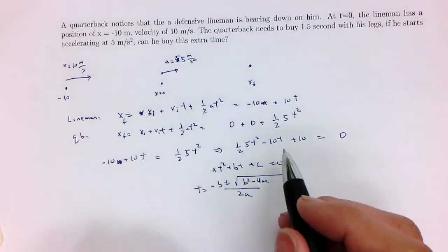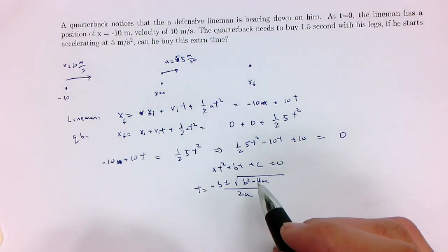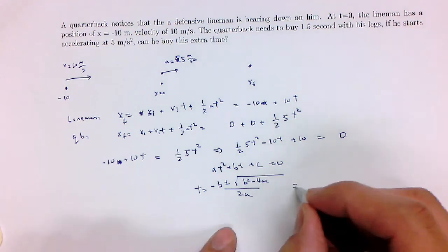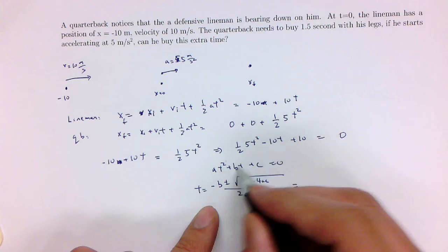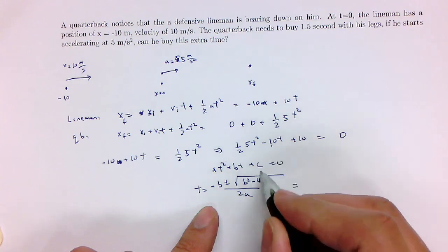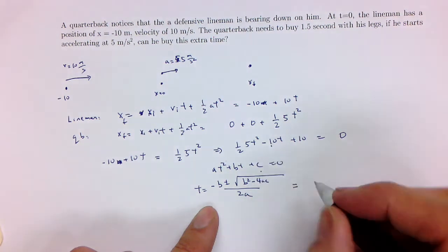So we just got to figure out what a, b, and c are in this equation and then plug into this formula. Let's write this out. a is going to be 5 over 2, b is going to be minus 10, and c is going to be 10.